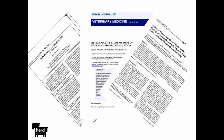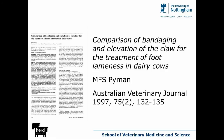I thought all the work had been done previously, so I extended the review back further through the literature — but actually we don't find it. The only other paper that comes up extending the search all the way back to the 1950s is a paper by Mike Pyman from Australia: 'Comparison of Bandaging and Elevation of the Claw for the Treatment of Foot Lameness in Dairy Cattle.' That is exactly the sort of paper I'd be interested in, but with all due respect to him, it has some significant flaws and is difficult to translate into a UK clinical context.